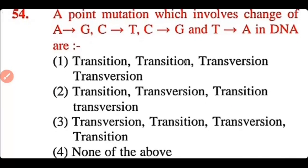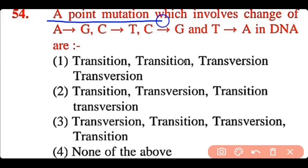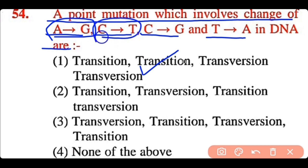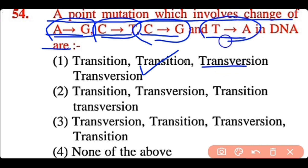Question 54: A point mutation involving the change of A to G or C to T is a transition, while G to C or T to A represents a transversion. The correct answer is option 1. When A is replaced by G or C is replaced by T, this is called transition; when G is replaced by C or T is replaced by A, this is called transversion.